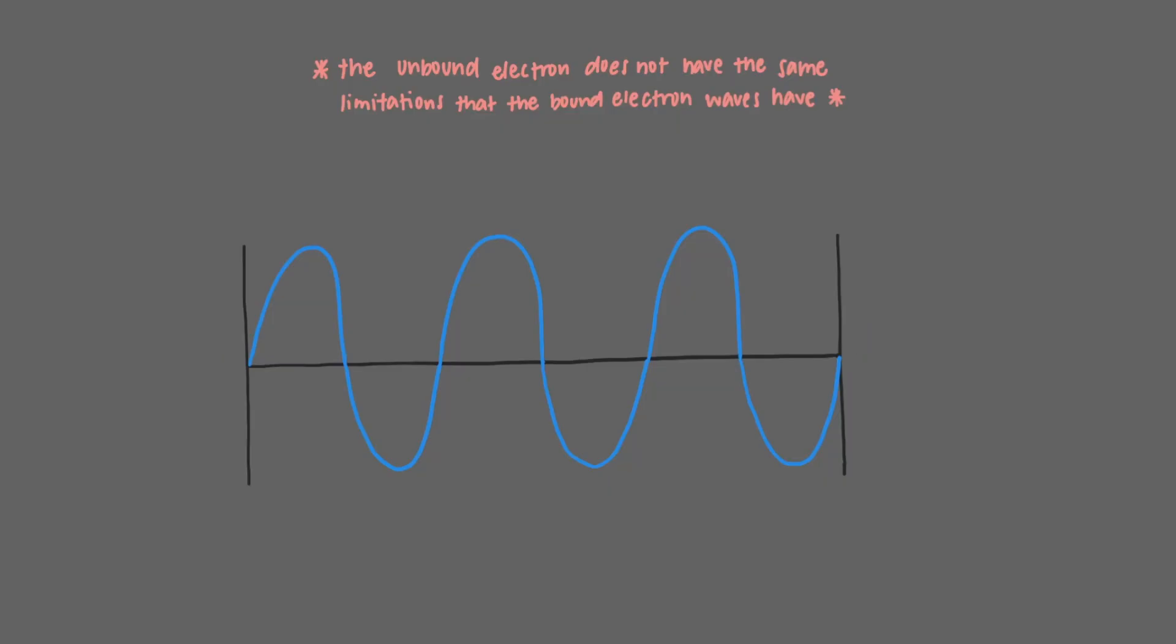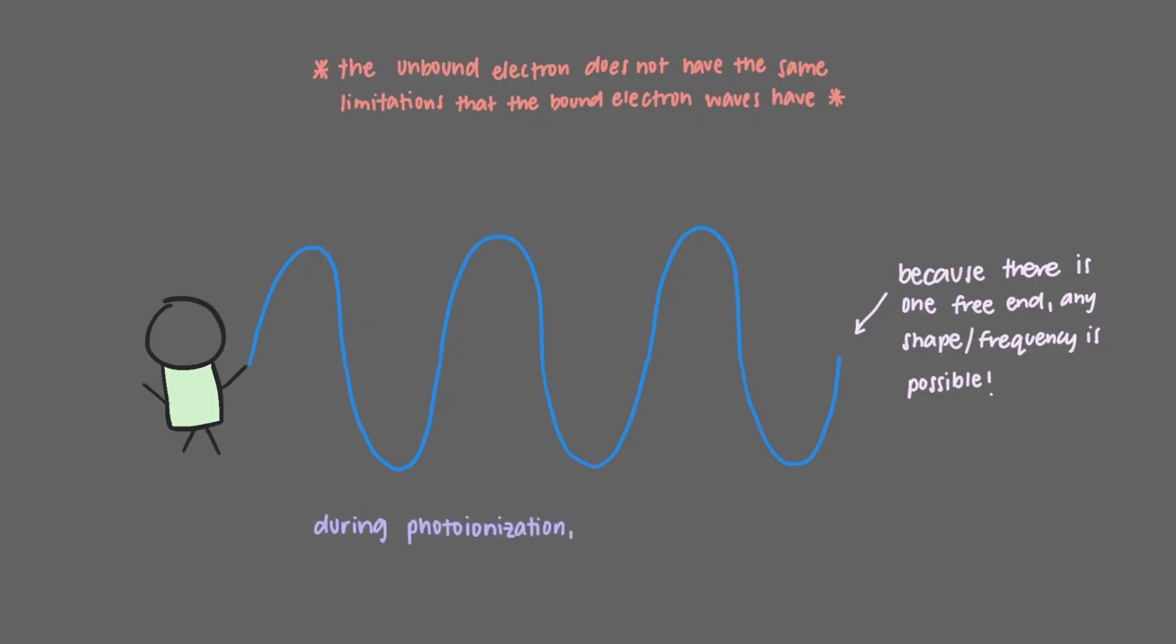This is like two people holding a jump rope. You can only make certain waves in the rope. But what happens if one person lets go? Suddenly, any shape or frequency wave is possible. That's what happens during photoionization.